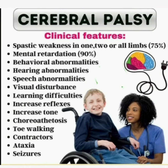The clinical features or presentation of cerebral palsy in children are: spastic weakness in one, two, or all limbs — that is 75 percent. Mental retardation occurs in 90 percent. Other features include behavioral abnormalities, hearing abnormalities, speech abnormalities, visual disturbance, learning difficulties, increased reflexes, increased tone, choreoathetosis, toe walking, contractures, ataxia, and seizures.